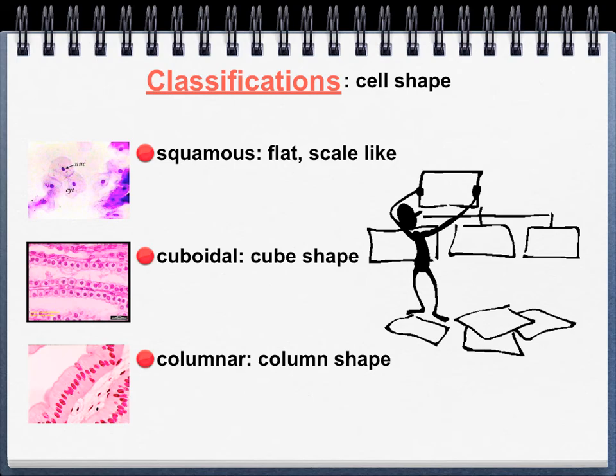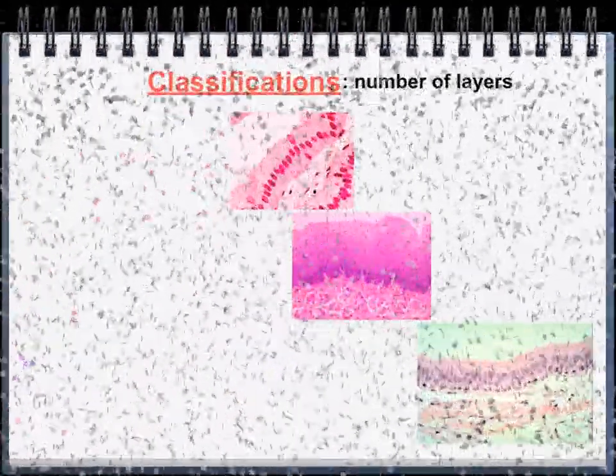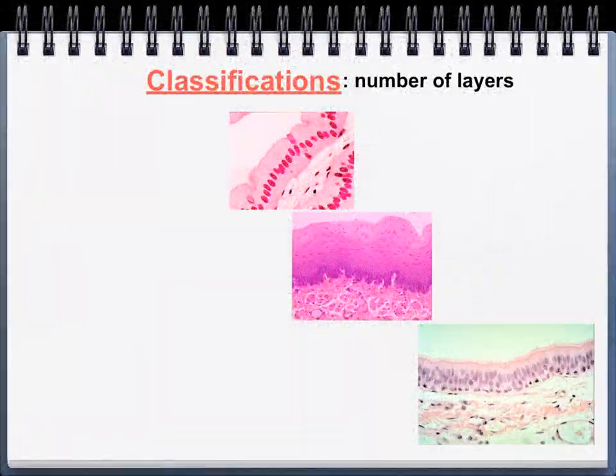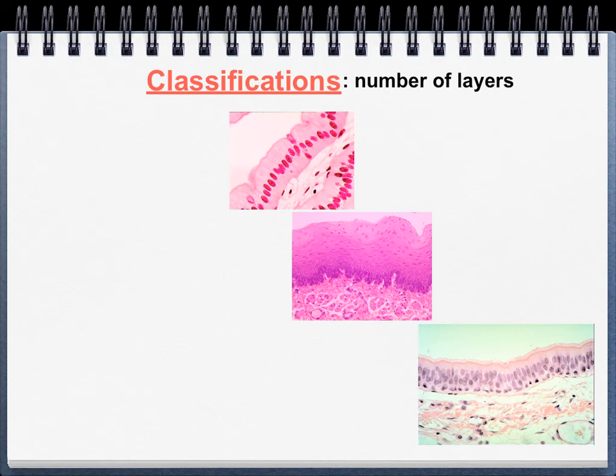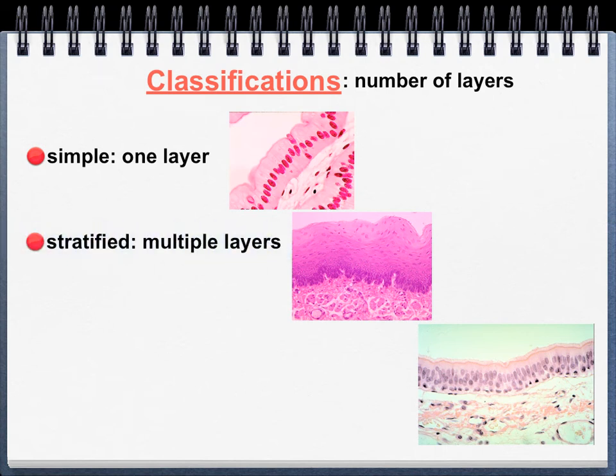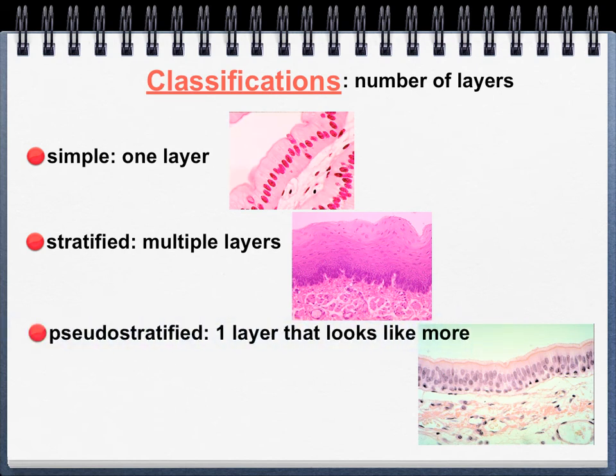An epithelial can also be characterized or classified by the number of layers of cells. If there's only one layer of cells, it's called simple—easy enough to remember. If there are multiple layers of cells, it's called stratified. And there's this other thing called pseudostratified—pseudo meaning not really, pretending.